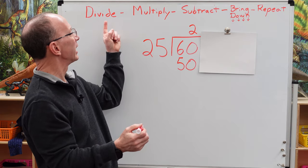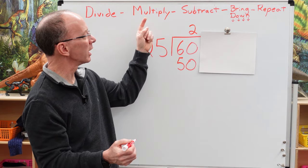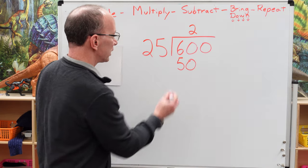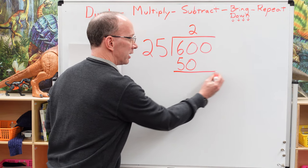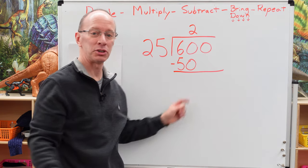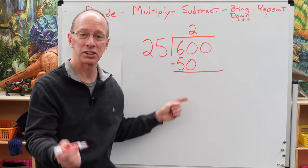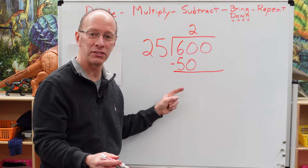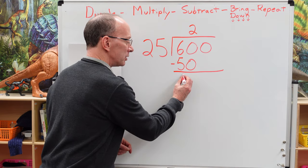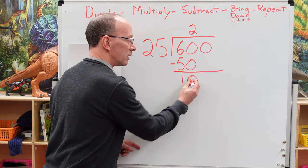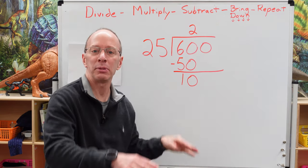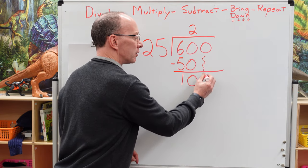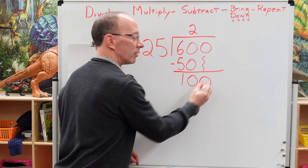So I'm going to put 2 right here. Two times 25 is like two quarters — it would be 50. So what I do is divide, multiply, and now I have to subtract. I'm going to put a line right underneath here and put my subtraction sign, and go ahead and subtract. 60 minus 50 is 10. So I put 10 right here. Now I bring down that next number.